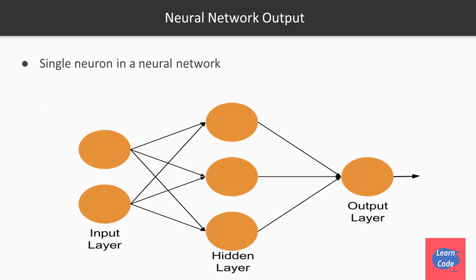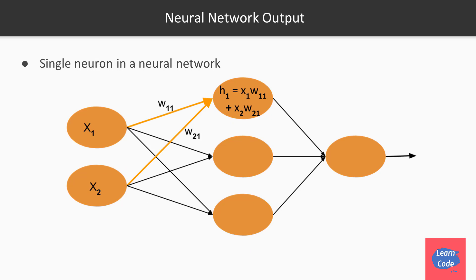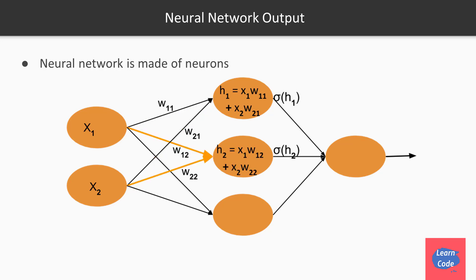Now let's see how the weights and the inputs are used to get the output. Let's say we have two inputs x1, x2, and two weights w11 and w21, representing the weight going from x1 to the first node and x2 to the first node. The first hypothesis h1 is equal to x1·w11 plus x2·w21, and the output from this node will be sigmoid of h1. Similarly, for node 2, h2 is equal to x1·w12 plus x2·w22, where w12 and w22 are the weights coming from x1 and x2 to the second node.